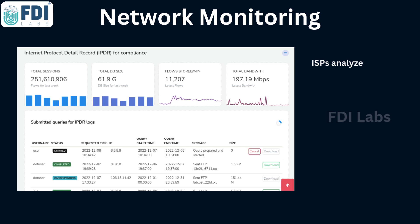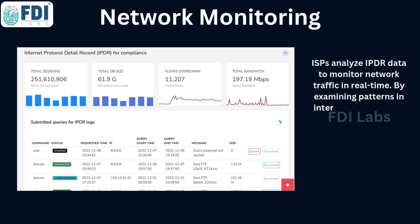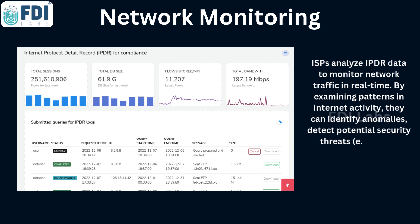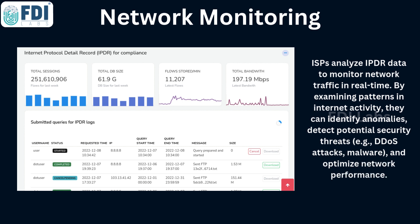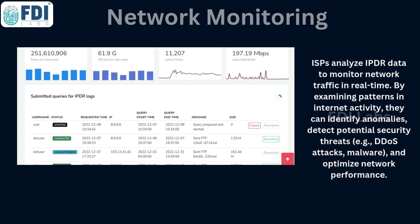IPDR data is used by ISPs to closely monitor current events occurring on their networks. They can rapidly detect any unusual or strange behavior by closely observing how people use the internet. This aids in their ability to prevent major issues before they arise, such as cyber attacks like DOS attacks and harmful software viruses. Additionally, ISPs can study this data and make minor tweaks to the network's operation to ensure optimal performance.